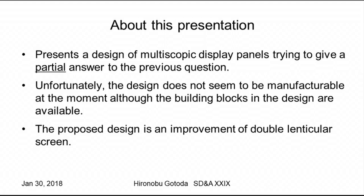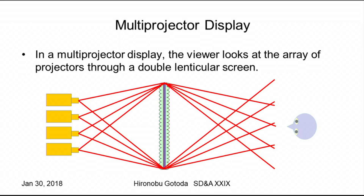Briefly, it's an improvement of double-lenticular screens. Here's an illustration of a multi-projector display consisting of arrays of multiple projectors and a double-lenticular screen. The viewer is looking at the light field emitted from the projectors through the double-lenticular screen. The screen itself does not contain any optically controllable objects.